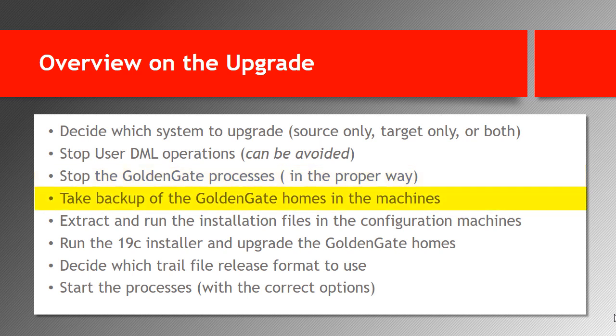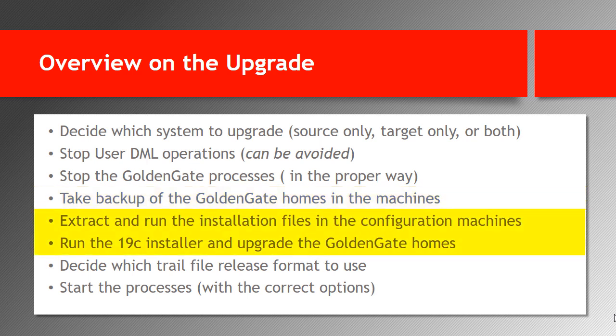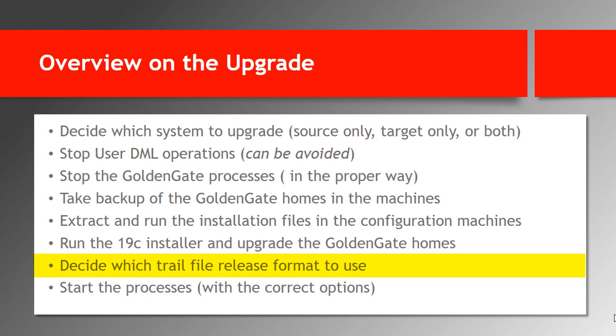After stopping the processes, take a backup of the GoldenGate homes in the systems you want to upgrade. Then upgrade the Oracle GoldenGate homes in those systems. We can upgrade the existing home — there is no need to install the new release in a separate home directory. After that, we need to decide whether to use the trail file format of the new release or keep the current trail file format. If we are upgrading both source and target systems, we let the processes create trail files of the latest release format. If we are upgrading the source system only, we should keep the existing file format, because the target system cannot read from the latest release trail file format unless it is also upgraded.